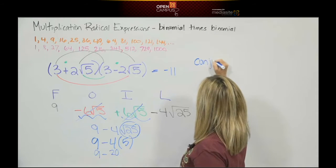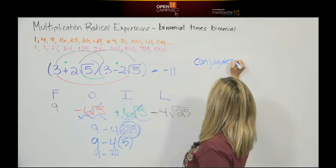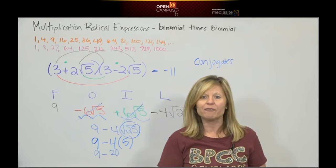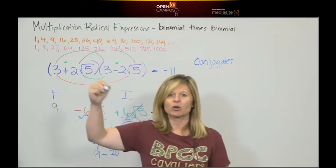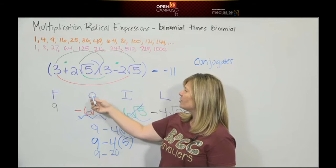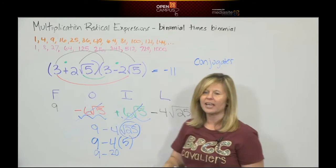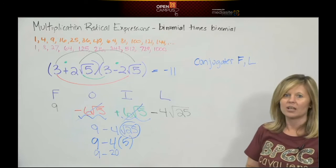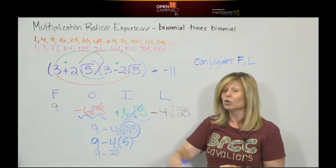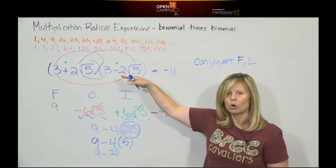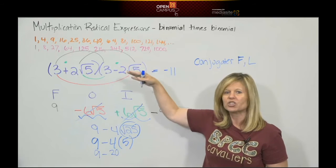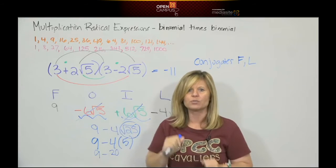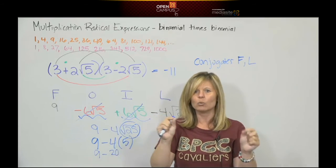And we learned a trick in polynomial land. When we multiply binomials that are conjugates, we don't have to do first, outer, inner, last. Because we know when we multiply conjugates, the outers and the inners are always going to cancel. So we multiply conjugates, we just do the first and last. And you can still use that rule here in rational world, in radical world. Because in radical world, these are still conjugates. Because they're binomials with the same terms connected in the middle with opposite signs.